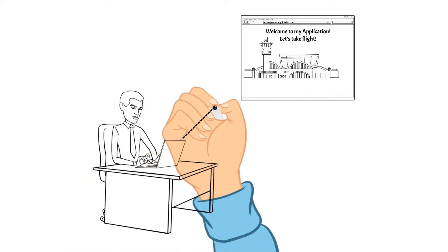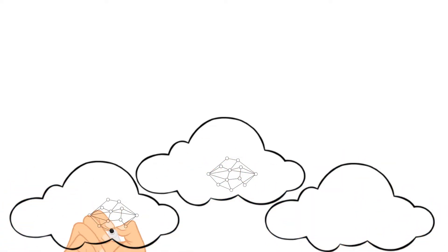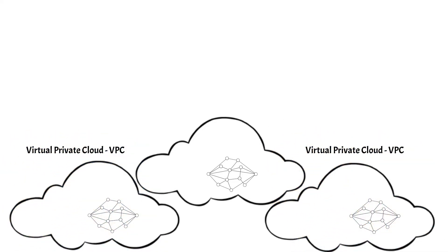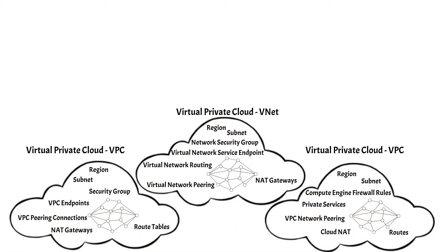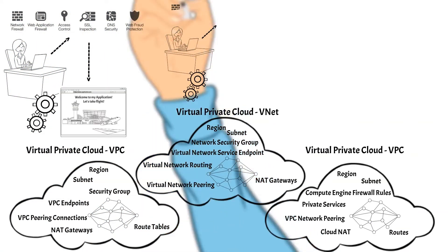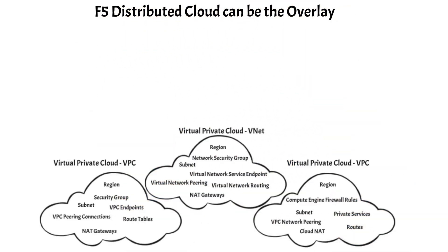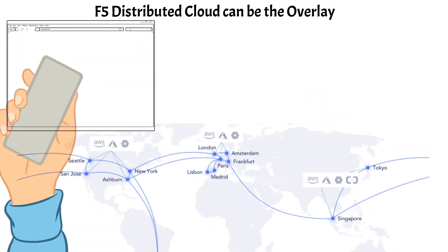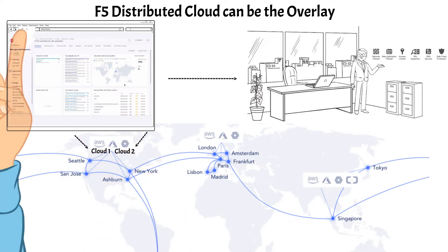For a client to connect to an application, there needs to be a network created for the application to be configured on. There are multiple cloud providers that all have different terminology for their networking and security objects. A couple of cloud providers call their virtual private cloud a VPC and another cloud provider calls it a VNet, and that is just for the cloud name object. There are many objects underneath that need to be created for the traffic to flow to that cloud. F5 distributed cloud can be an overlay on top of all the networks to allow for configuration in one location and simplify the security stack, giving the ability to configure an application in cloud 1 and cloud 2 through the same GUI in a browser in a seamless manner.